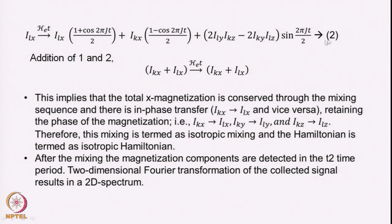If we add the two equations — the one originating from K spin and the one from L spin — the anti-phase terms completely vanish, and we have IKX + ILX going to IKX + ILX. The x magnetization is completely conserved; it is just distributed between the two spins. Similarly, if you started with IKY the same thing happens — KY goes to LY and LY goes to KY; starting with KZ, it goes from KZ to LZ and LZ to KZ. This mixing by the spin lock is called isotropic mixing because it retains the phase, and the Hamiltonian is termed the isotropic Hamiltonian.